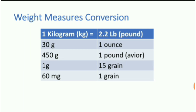Weight measurement conversion table: one kg is equal to 2.2 lb (pounds); 30 grams is equal to 1 ounce; 450 grams is equal to 1 pound or avoirdupois; one gram is equal to 15 grains; and 60 mg is equal to 1 grain.